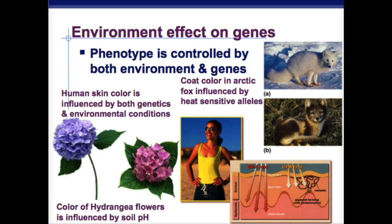The more exposure you have to UV light, the darker your skin is. And then there's the arctic fox — in colder temperatures he'll be white, and as it begins to warm up he'll start molting his fur, and his brown fur will be seen.